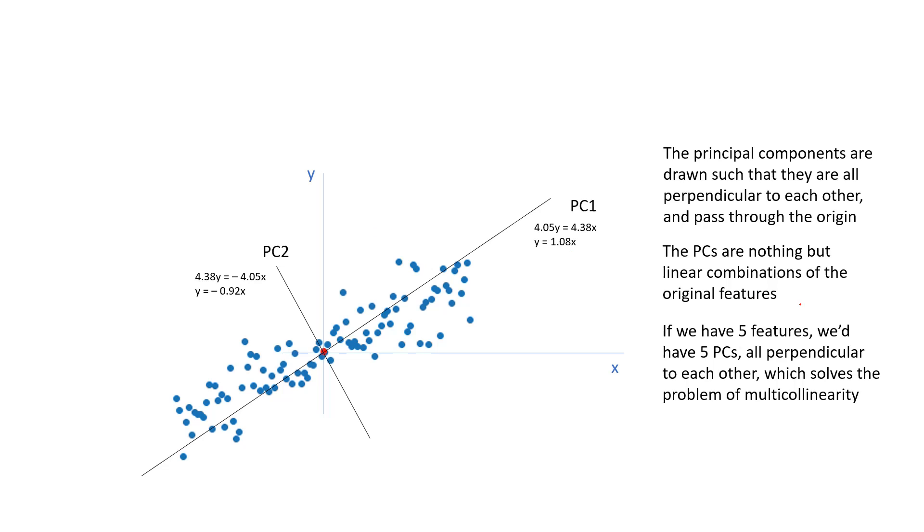How would the case with 5 features work? Well, in 5 features, we will have 5 dimensions of the data. After drawing the PC1, we will have 4 other choices to make the principal component 2. And in whichever of those 4 perpendicular directions the amount of variation is the maximum, that will become the principal component 2. And the next direction will have the next highest amount of variance, etc.